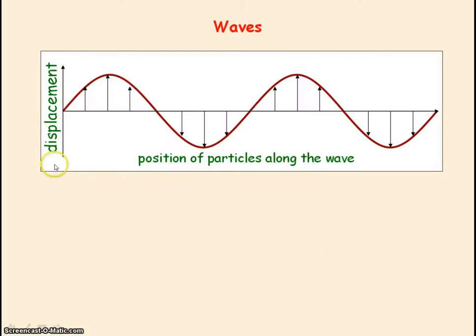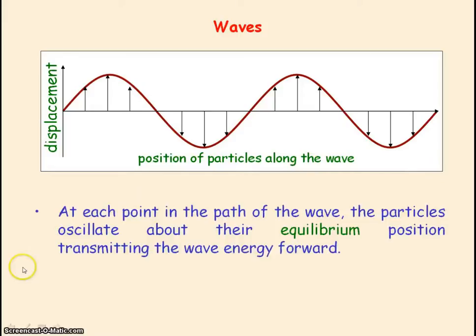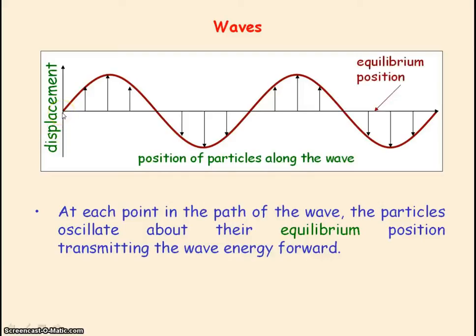This graph shows the displacement of the particles along a wave at a given instant in time. At each point in the path of the wave, the particles oscillate about their equilibrium position — also known as the rest position — which is the position they would be in if they were not moving, so that means it's at zero displacement. At each point along the wave, the particles are oscillating about the equilibrium position, transmitting the wave energy forward.